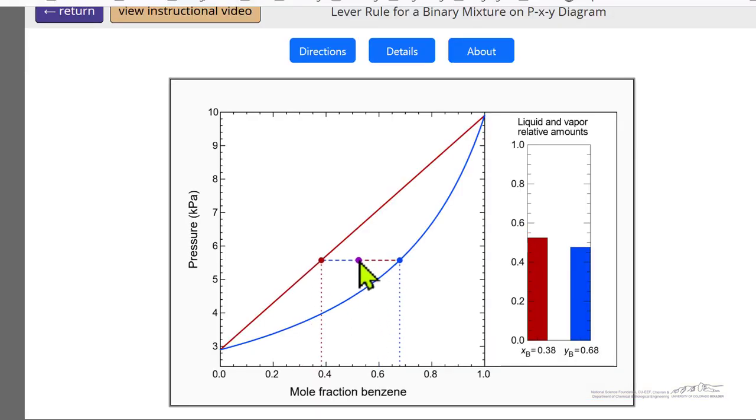We move it to the left, we have more liquid, less vapor. This distance between the blue and the purple, that's proportional to the amount of liquid. Of course, we move it all the way over here, it's all liquid. All over here is all vapor.